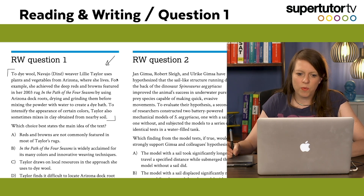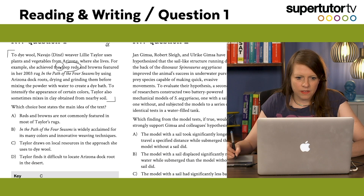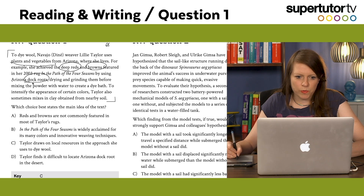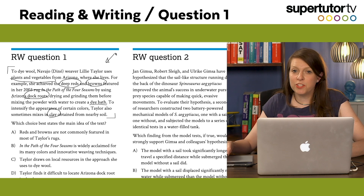To dye wool, Navajo weaver Lily Taylor uses plants and vegetables from Arizona where she lives. For example, she achieved the deep reds and browns featured in her 2003 rug by using Arizona dock roots, drying and grinding them before mixing the powder with water to create a dye bath. To intensify the appearance, Taylor also sometimes mixes in clay from nearby soil. The question asks: which best states the main idea of the text?